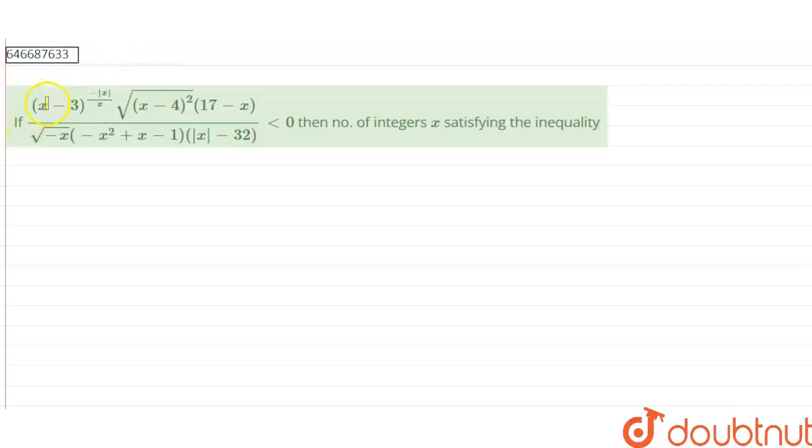If (x - 3)^(-|x|) divided by x times √(x - 4)² times (17 - x) divided by √(-x) times (-x² + x - 1) times |x - 32| is less than 0, then we need to find the number of integers x which satisfies the following inequality, that is this inequality.